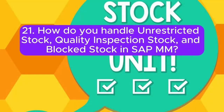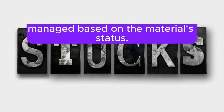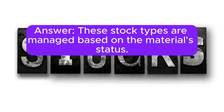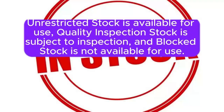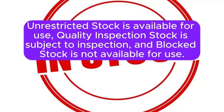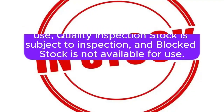Question 21: How do you handle unrestricted stock, quality inspection stock, and block stock in SAP MM? Answer: These stock types are managed based on the material status. Unrestricted stock is available for use, quality inspection stock is subject to inspection, and block stock is not available for use.